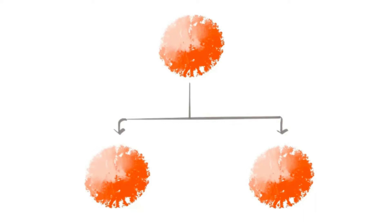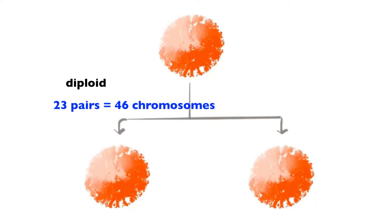One thing to note about mitosis: the original cell that starts out is what's known as diploid — it has the full complement of 23 pairs of chromosomes, a total of 46 chromosomes. Chromosomes are the structures within the nuclei of cells that house the genetic information. There are pairs because one chromosome comes from the mother and one comes from the father. So in mitosis, we start out with a diploid cell and end up with two daughter cells that are also diploid.